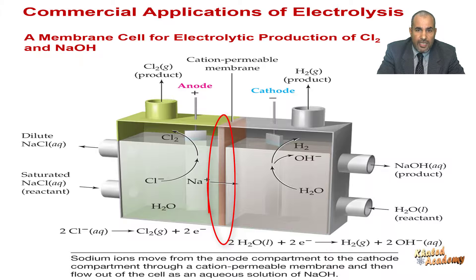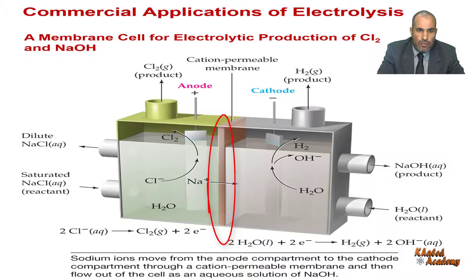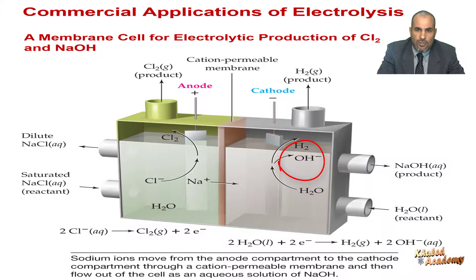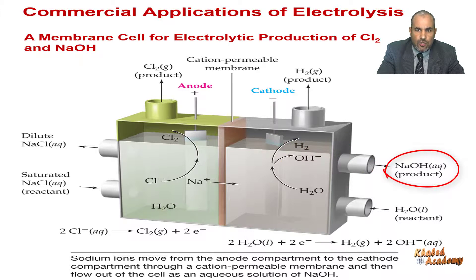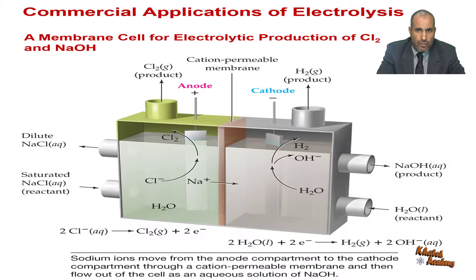The membrane keeps the chlorine and hydroxide ions apart but allows a current of sodium ions to flow into the cathode compartment, thus carrying the current in the solution and maintaining electrical neutrality in both compartments. The sodium ions and hydroxide ions flow out of the cathode compartment as an aqueous sodium hydroxide solution.